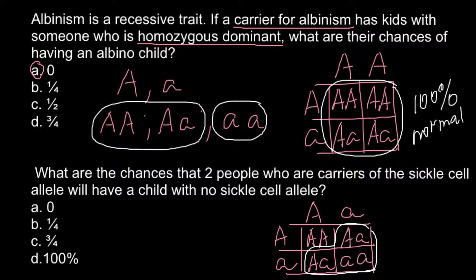As you can see, three out of four genotypes have at least one recessive allele. Only one out of four doesn't have a recessive allele. So the chances that the child would have no sickle cell allele at all is one quarter. The correct answer is one quarter.